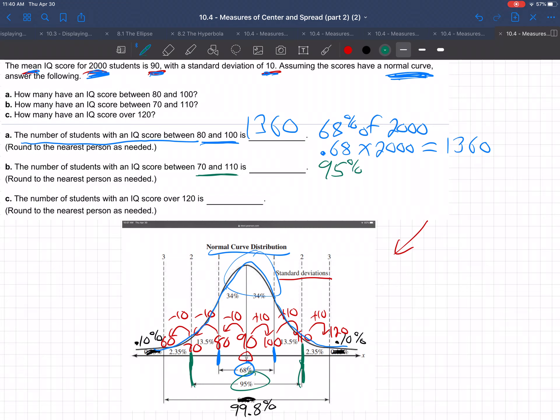So 95% of the 2,000 students, which means .95 times the 2,000 students, and that comes out to be 1,900 students would have an IQ between 70 and 110. That's almost everybody, all but 100 of the students.